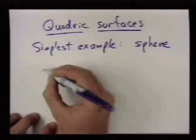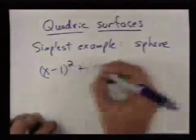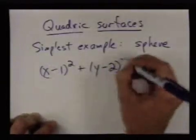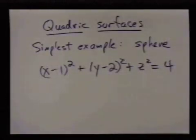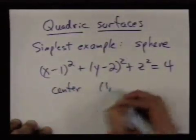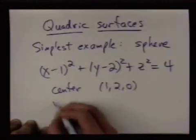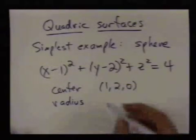So let me write down a sphere, say, x minus 1 squared plus y minus 2 squared plus z squared equals 4. Well, I've already told you this is a sphere with center 1, 2, 0, and radius equal to 2.